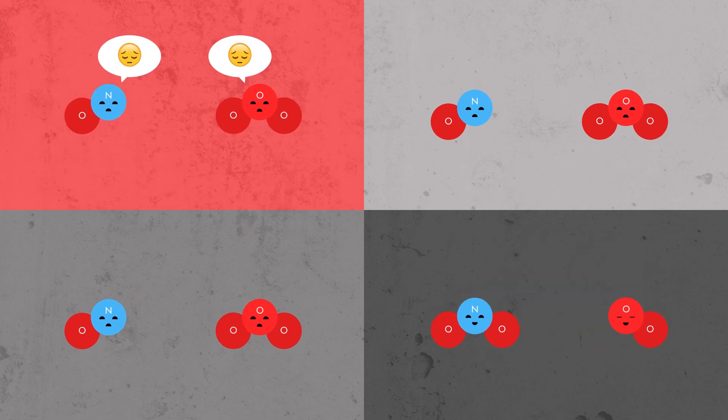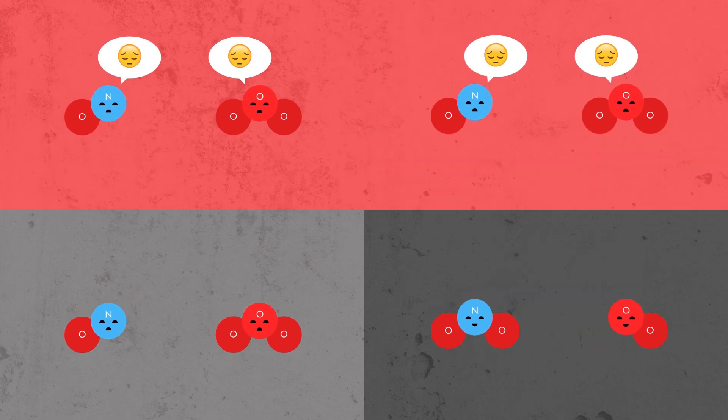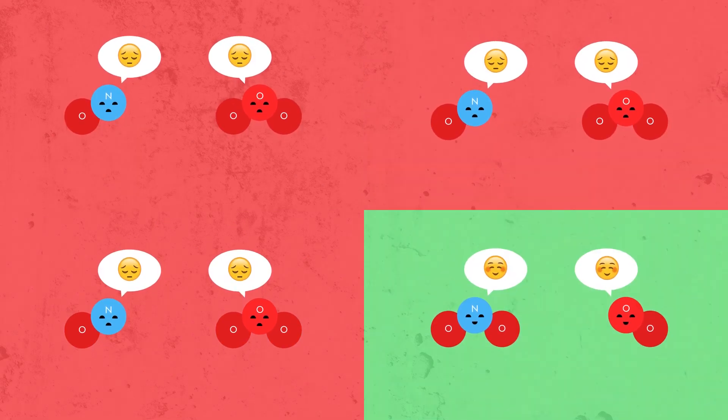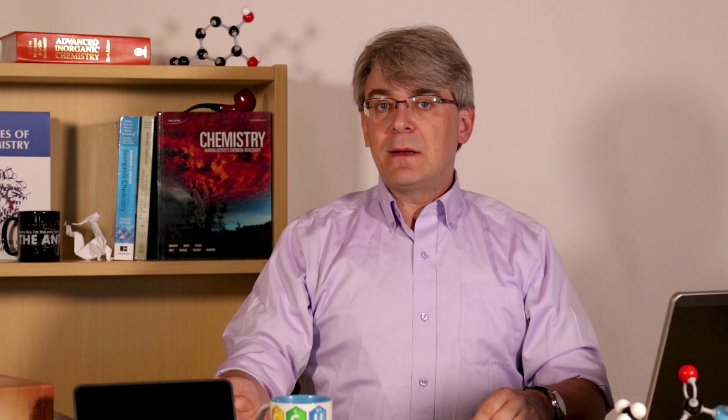Because collision orientation is random, most collisions will not be productive. The atoms in the reactive molecules won't be able to make and break the necessary bonds to form the products.